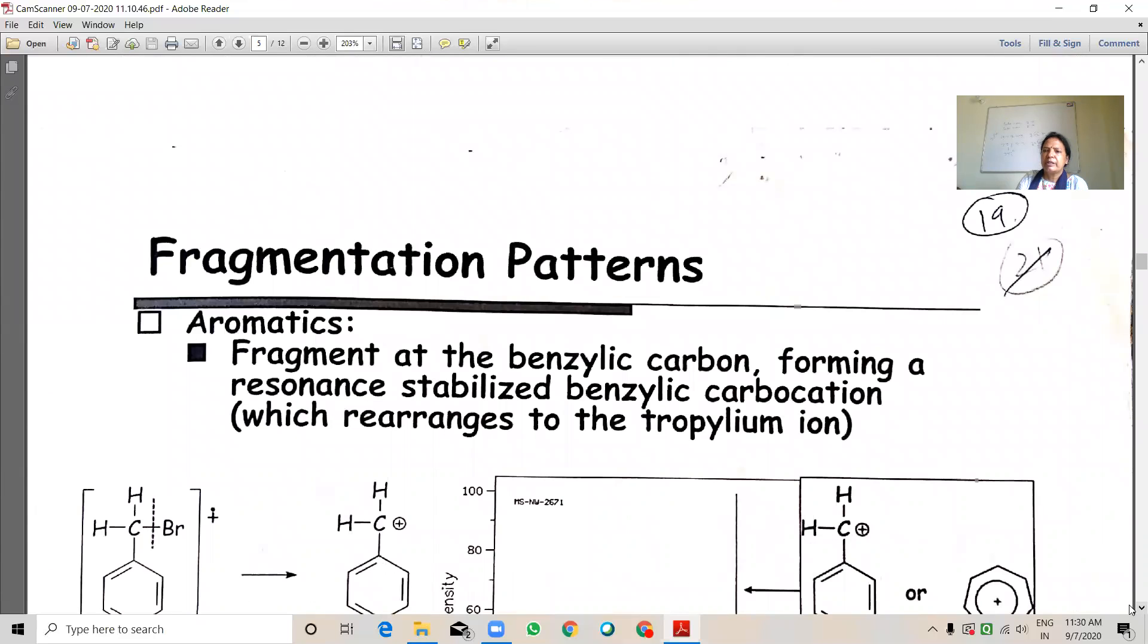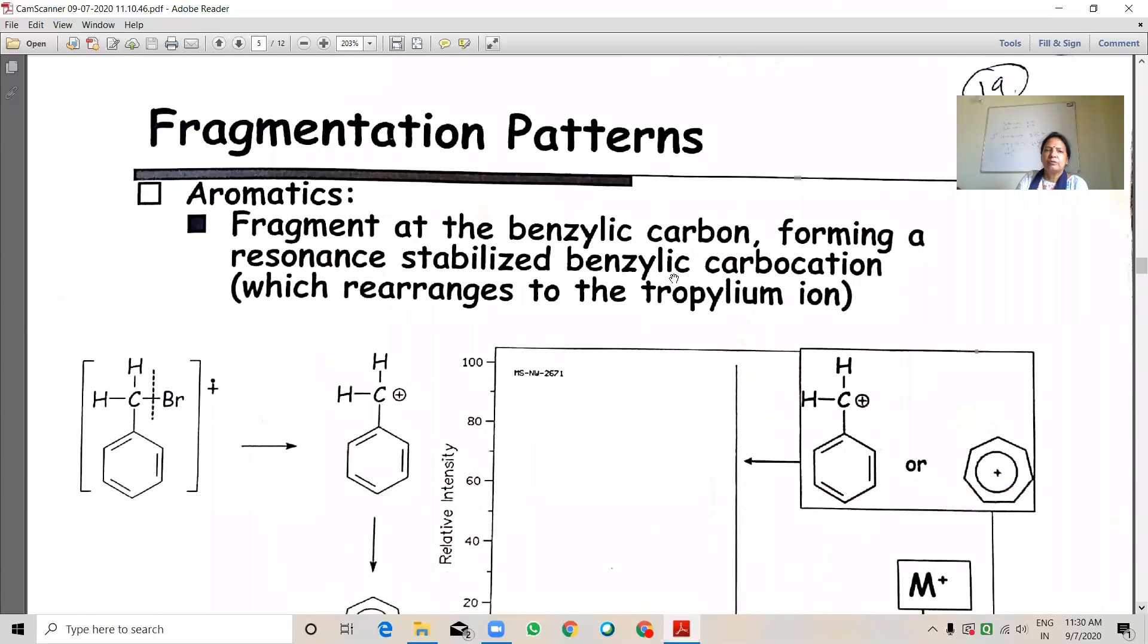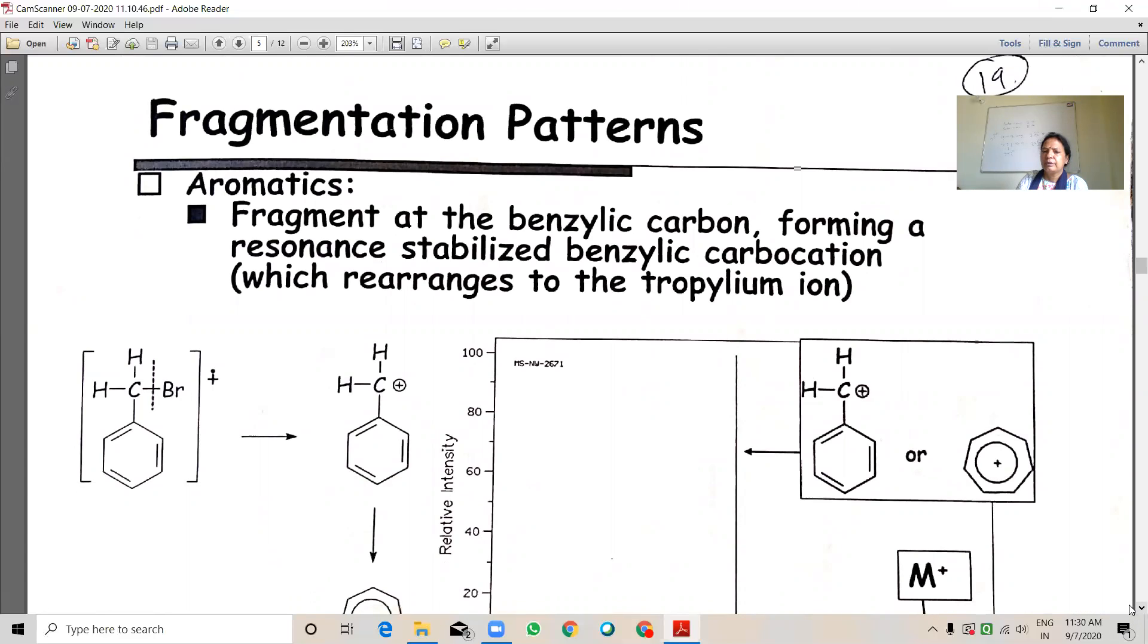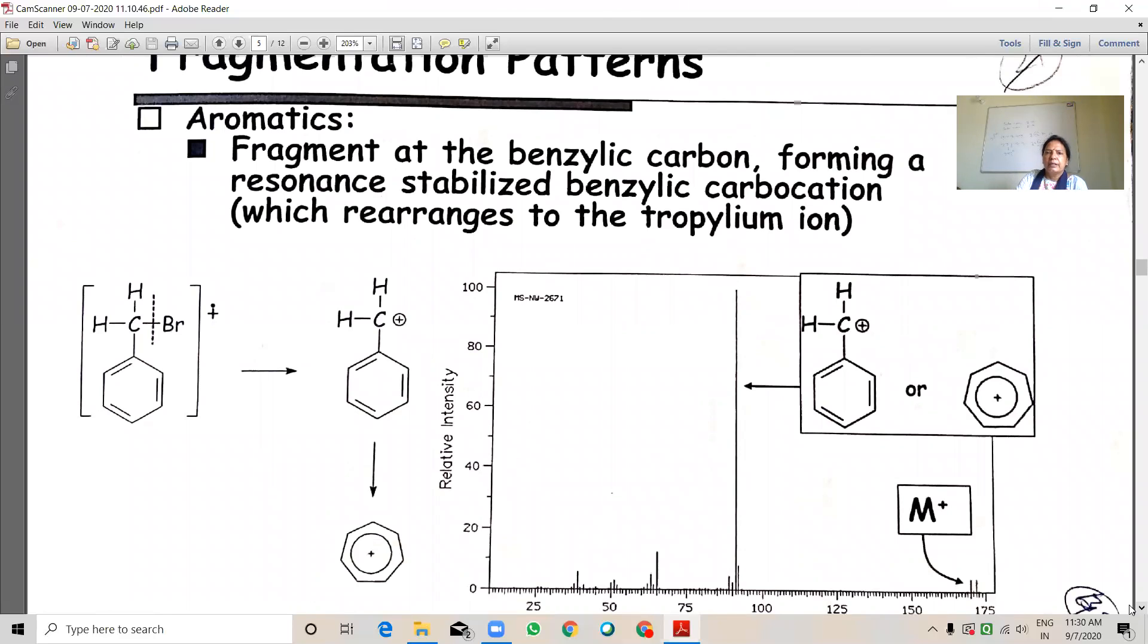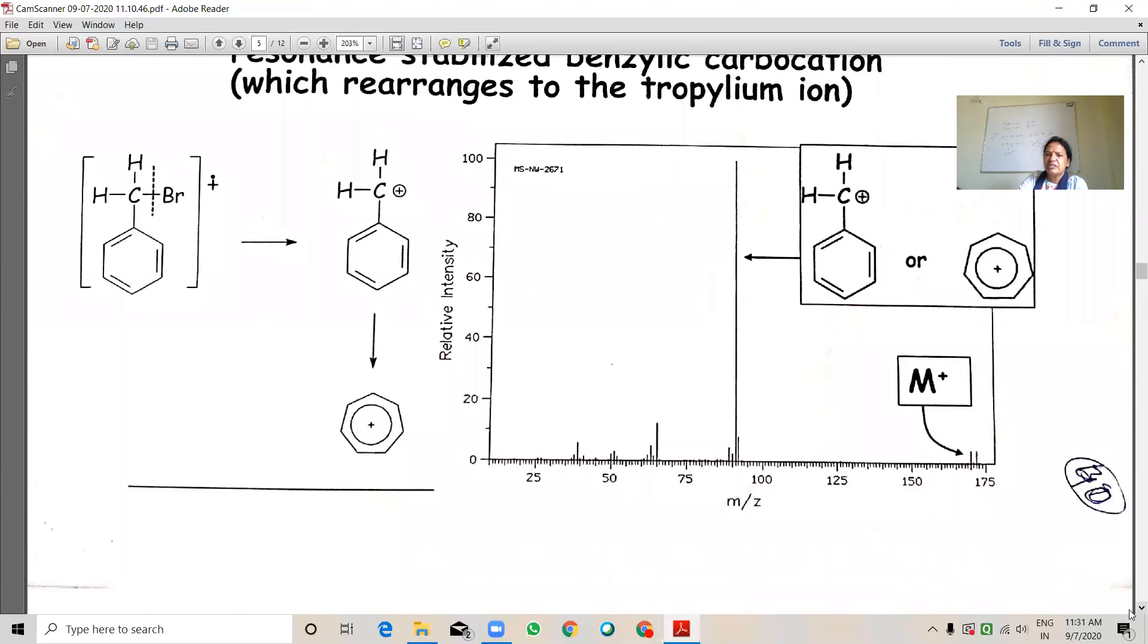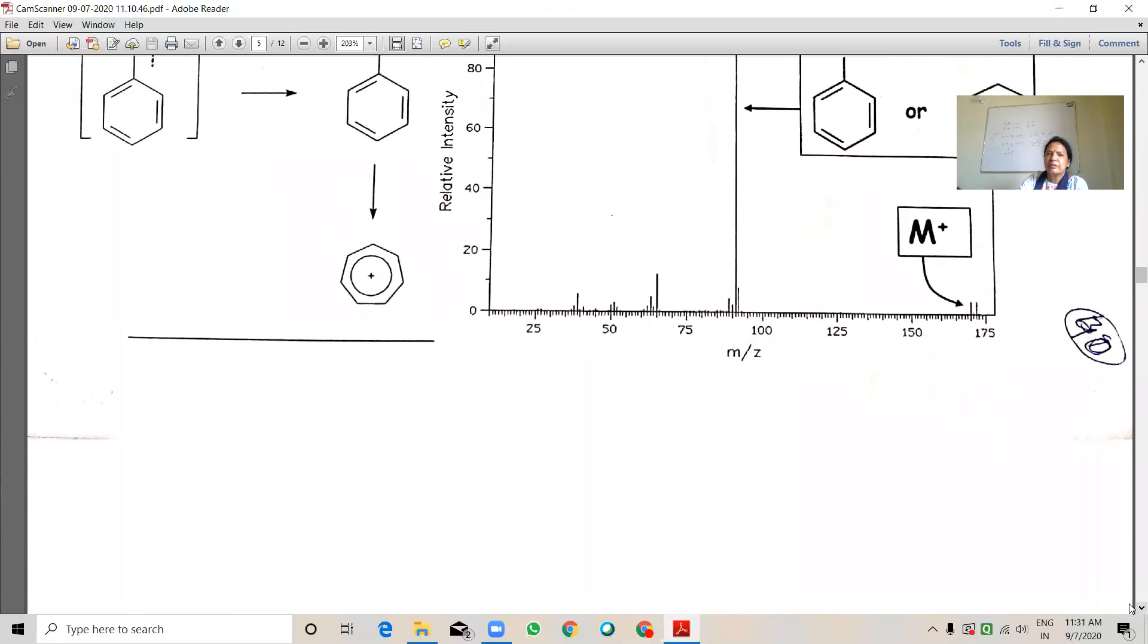This is the aromatic compounds. This is the benzene. Here, benzylic carbocation. It is a base peak of benzylic carbocation. See here. And this molecular ion peak having low abundance. So, benzylic carbocation having the highest abundance. It is a base peak. It is observed in the ethyl bromoethyl benzene.